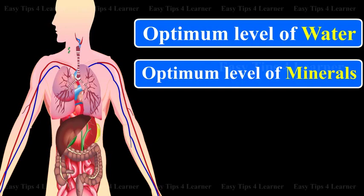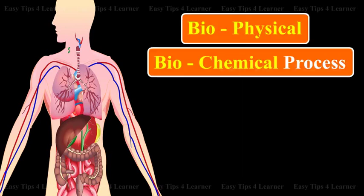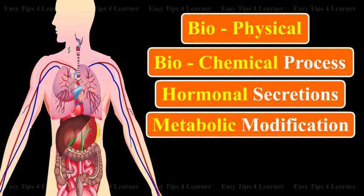Homeostasis is achieved by several biophysical, biochemical processes, hormonal secretions and related metabolic modifications.